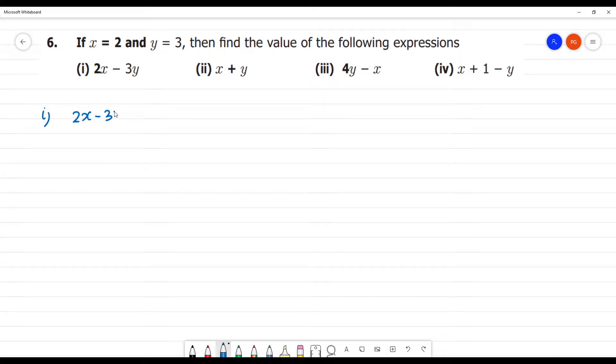2x minus 3y. Now, x has the value that is equal to 2 into x has the value 2 minus 3 into y has the value 3.